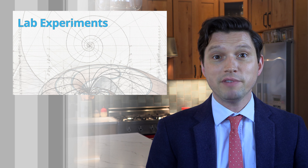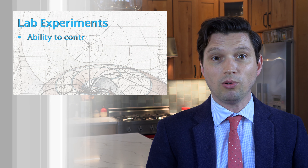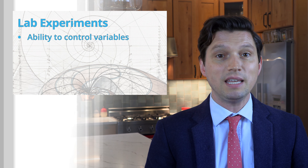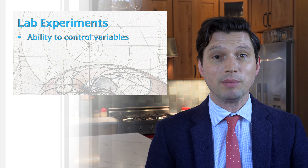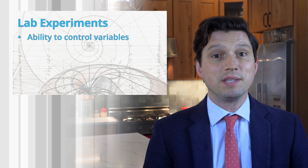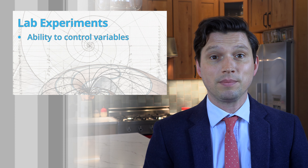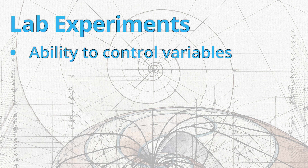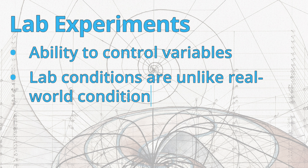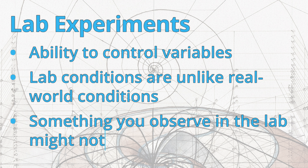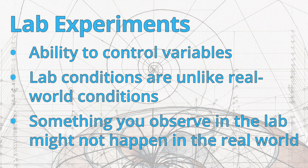It might seem like laboratory experiments are the gold standard for getting evidence. In the lab, as many variables as possible are controlled, so there are no unexpected influences on the outcome of the experiment. Variable control is the main goal of experiments. But this also has a downside: lab conditions are very unlike real-world situations, so something that works in the lab might not work in the same way, or might not work at all, outside of it.